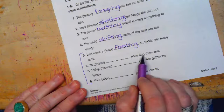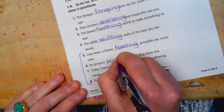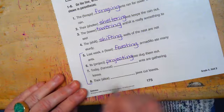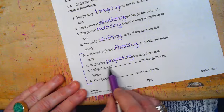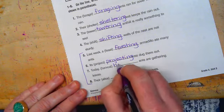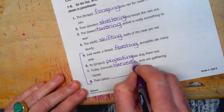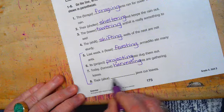Number six, its projecting nose dug them out. Today, harvest plus ING, harvesting ants are gathering leaves.